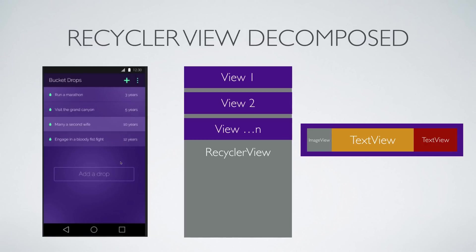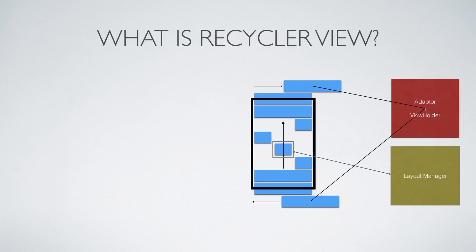The item at the bottom that says 'Add a Drop' is a special type of item called a footer. The RecyclerView can display not just one type of item — it can display different types. You can add a header at the top, a footer at the bottom, or even different types of items in between.